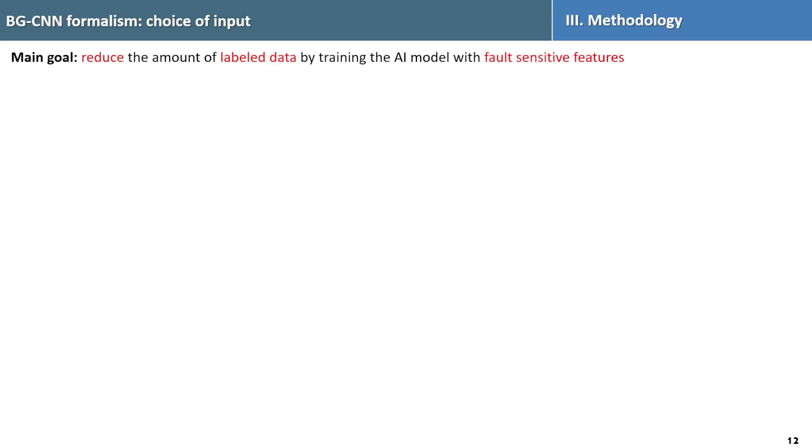First, we will look at the main idea behind the BG-CNN method or formalism. The goal is to reduce the amount of labeled data by training the AI model with fault sensitive feature.